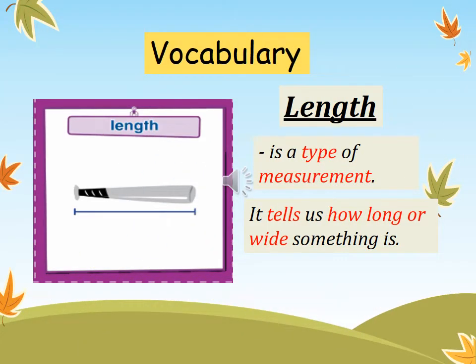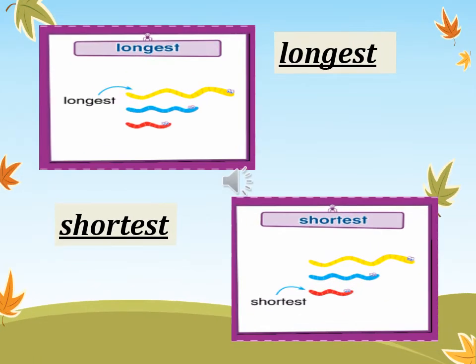Let's have the vocabulary words for this lesson. Repeat after me: Length. Length is a type of measurement. It tells us how long or wide something is. Next word: Longest. Look at the picture — the yellow worm is the longest among the three worms. Next: Shortest. Look at the picture — the red worm is the shortest among the three worms.